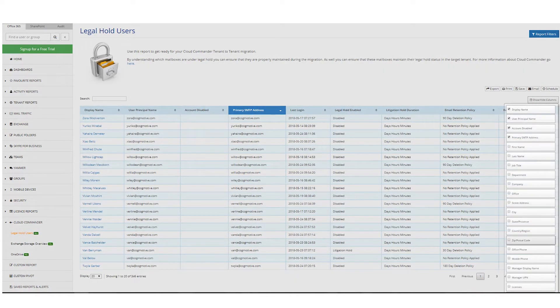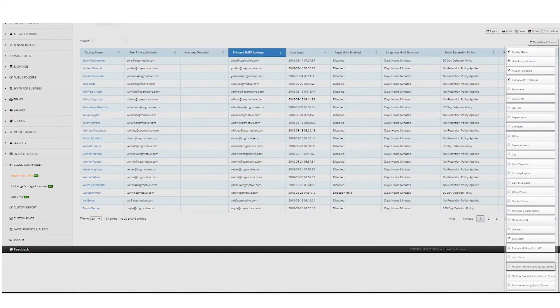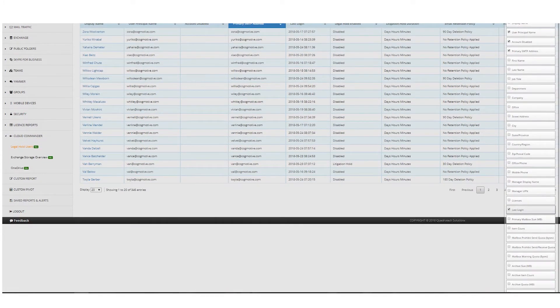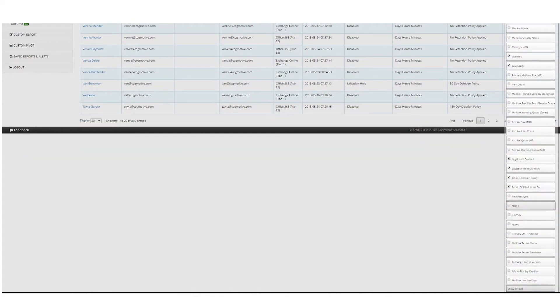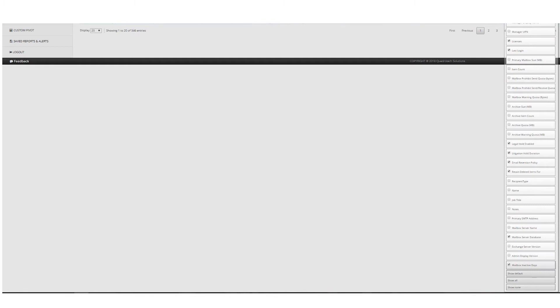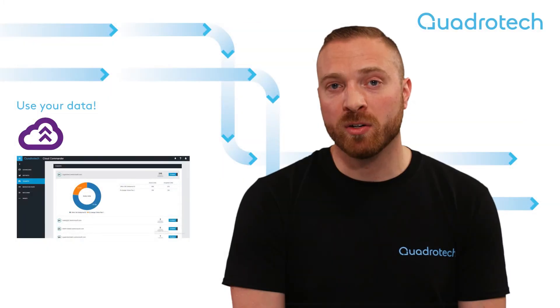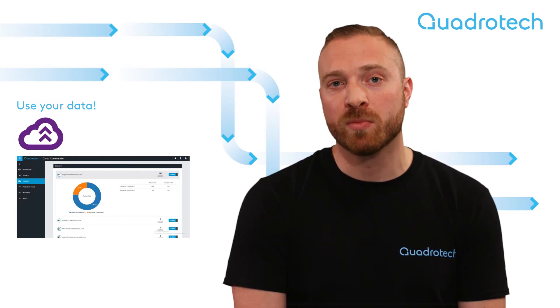A lot of the organizations we work with struggle during a merger, acquisition, or divestiture scenario to actually plan their migration. They don't know how much data they have, what workloads are being used. Using the data that we have from Radar and inside Cloud Commander as well, it solves this problem for organizations where they can properly plan for their cloud-to-cloud migration project.